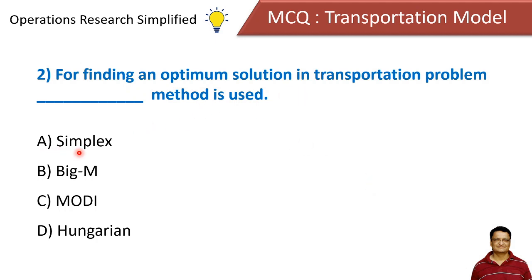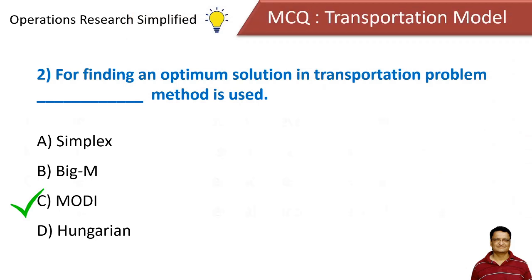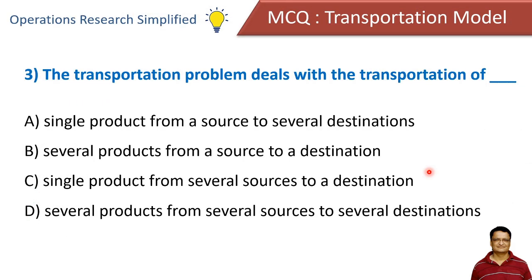For finding an optimum solution in a transportation problem, which method is used? Options: simplex method, big M method, MODI method, or Hungarian method. The answer is MODI method. To get the optimality test or optimum solution, we use either the stepping stone method or the MODI method, which is called the modified distribution method or UV method.